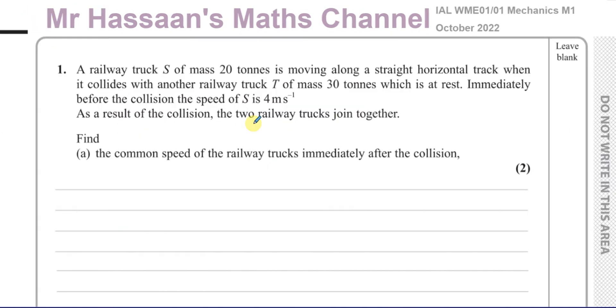Question number one. We have a railway truck S of mass 20 tonnes moving along a straight horizontal track when it collides with another railway truck T of mass 30 tonnes, which is at rest. Immediately before the collision, the speed of S is 4 metres per second. As a result of the collision, the two railway trucks join together. We've got to find the common speed of the railway trucks immediately after the collision.